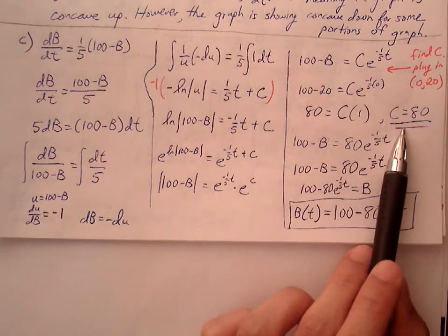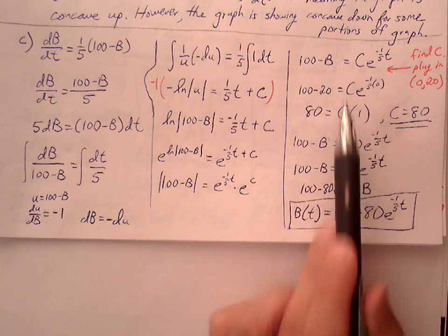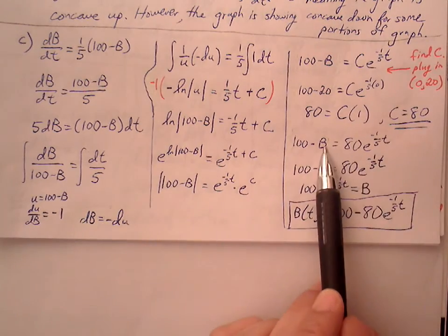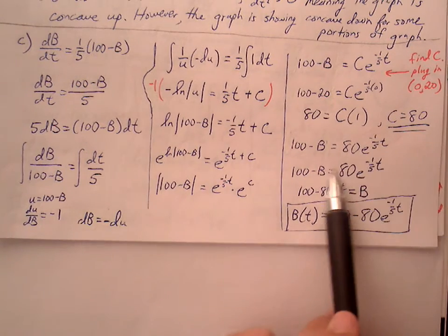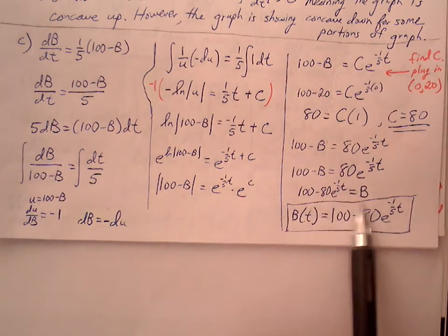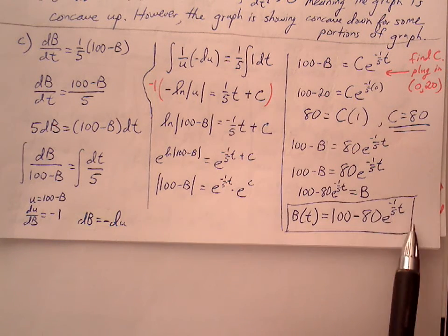Go ahead and make that substitution back to our general equation to make it a particular equation. Now we just have to solve for B. I'm going to move B over to the right side, subtract the 80 over to the left, and my B is equal to 100 minus 80e^(-1/5 t).